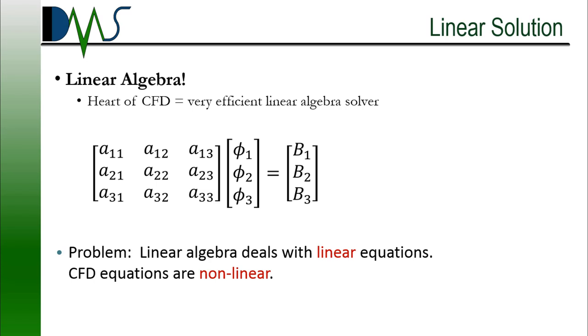Except we run into a little hitch here. Linear algebra deals with linear equations. CFD equations, though, are non-linear. We have phi squared. We have d²phi, d²phi squared. We have phi x, phi y. We have all these combinations of non-linear equations here. And that's a problem, because linear algebra doesn't work with that. So how do we deal with that?